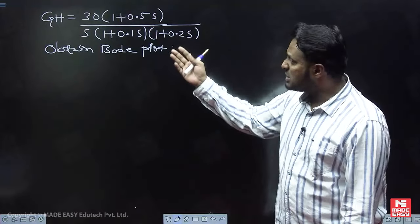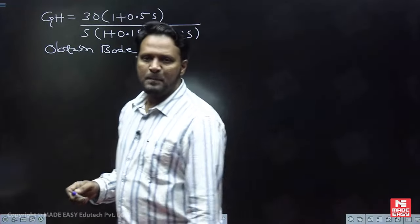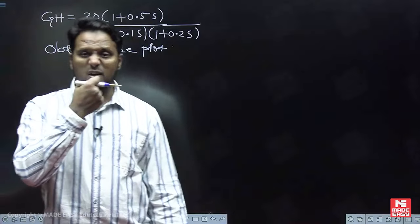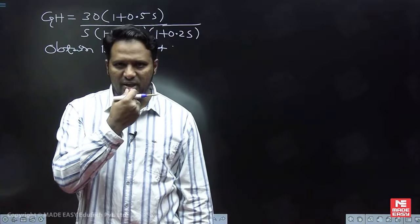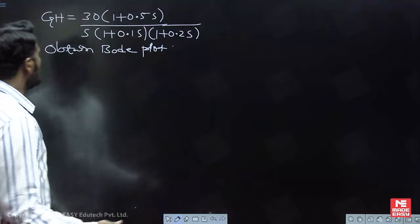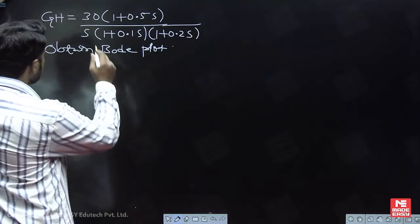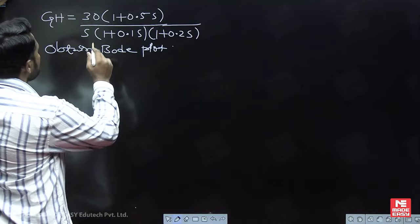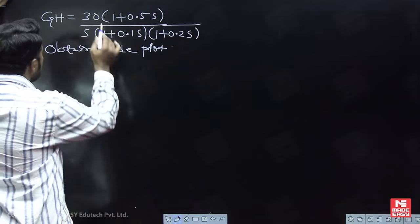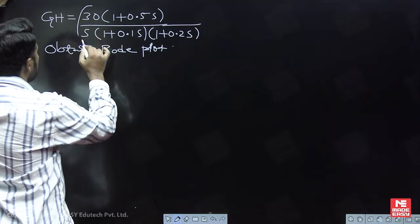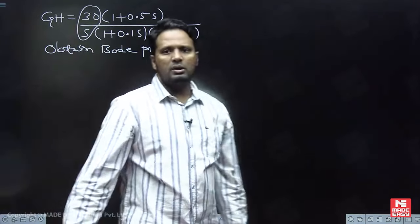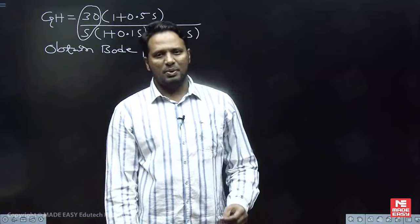We can proceed. Let me first get the magnitude plot, then I will show you the phase plot. Look at the board. The Bode plot first step: K divided by s to the power r.